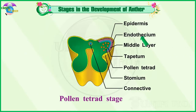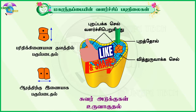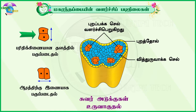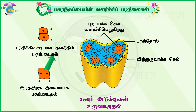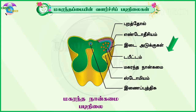The anther wall layers are composed of endothecium, middle layers, and tapetum — from periphery to center. (Tamil: 2 to 5 layers form the anther wall composed of endothecium, middle layers, and tapetum, from outer to inner.)